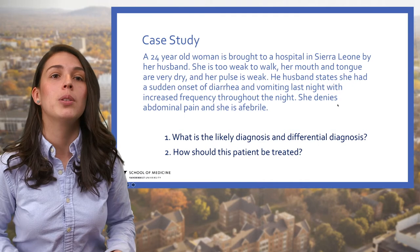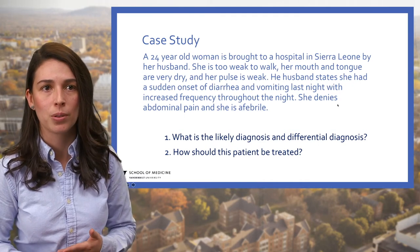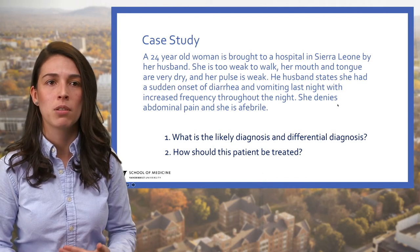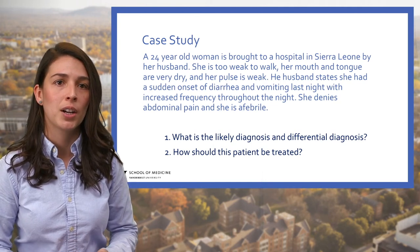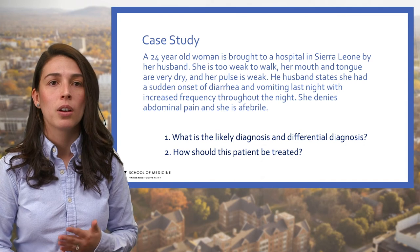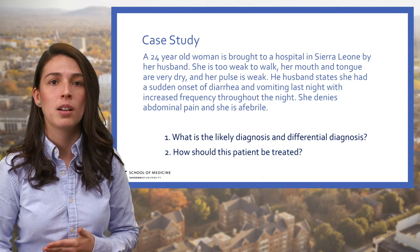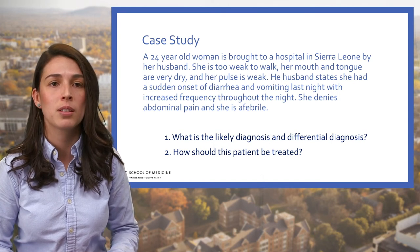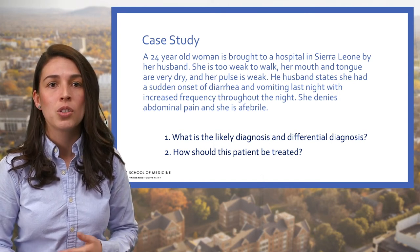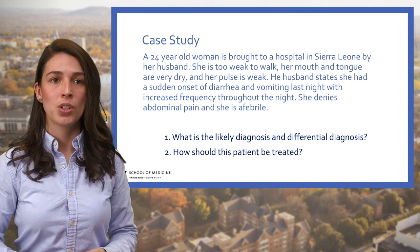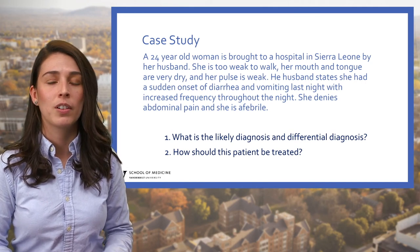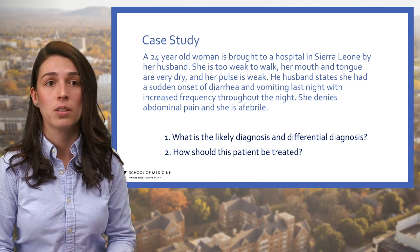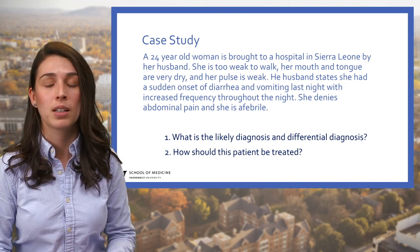Case study: A 24-year-old woman is brought to a hospital in Sierra Leone by her husband. She is too weak to walk, her mouth and tongue are very dry, and her pulse is weak. Her husband states she had a sudden onset of diarrhea and vomiting last night with increased frequency throughout the night. She denies abdominal pain and is afebrile. What is the likely diagnosis, the differential diagnosis, and how should this patient be treated?